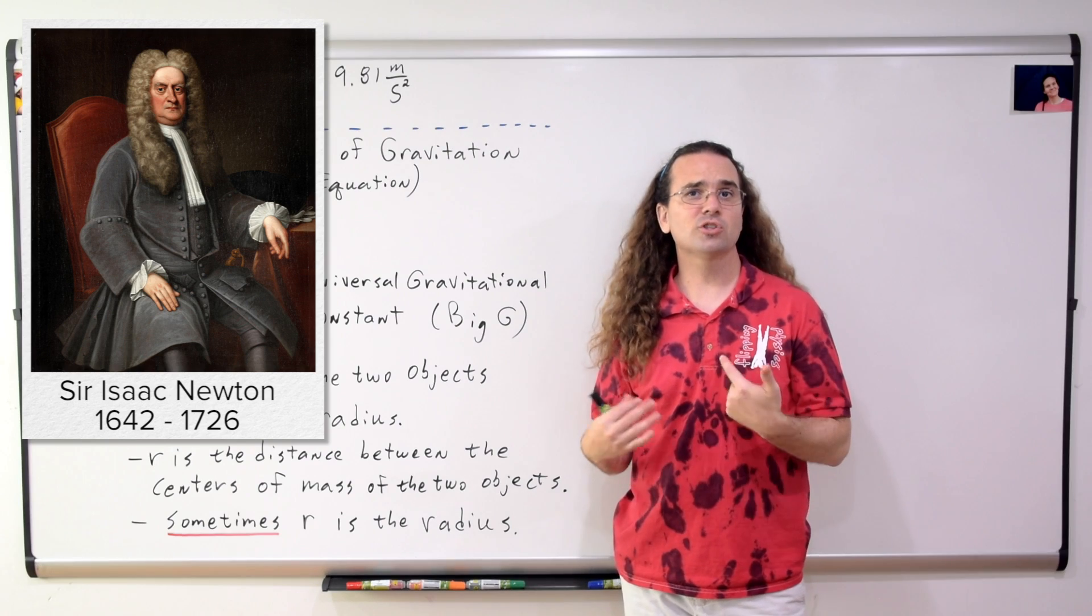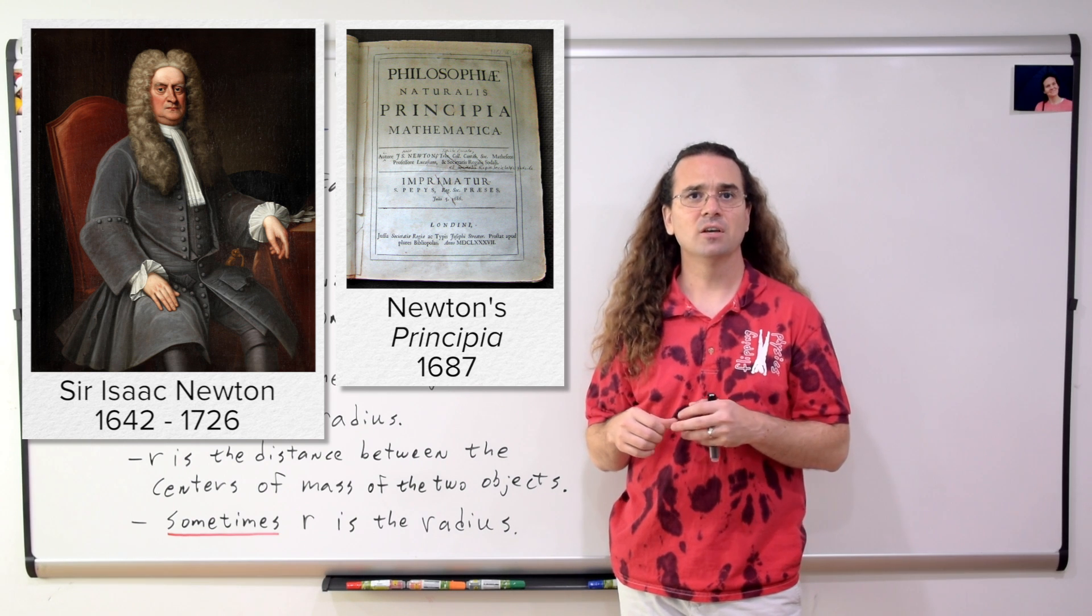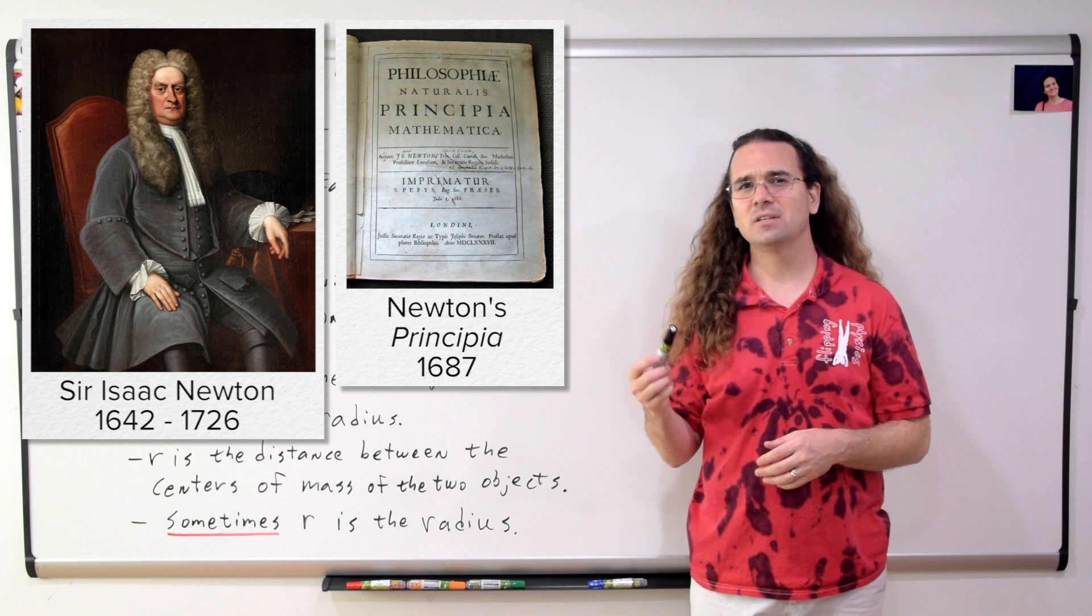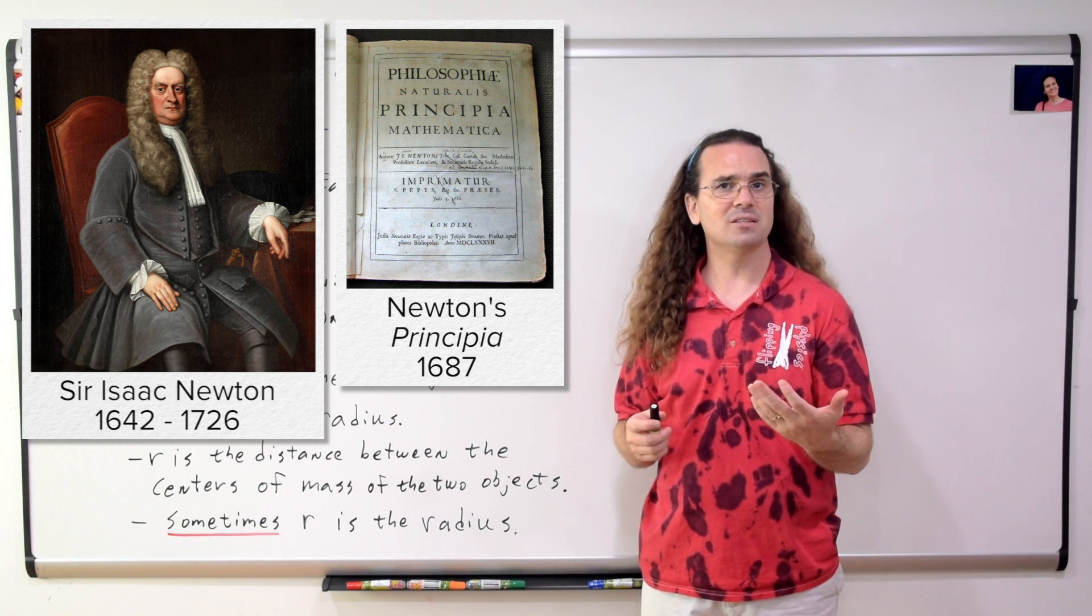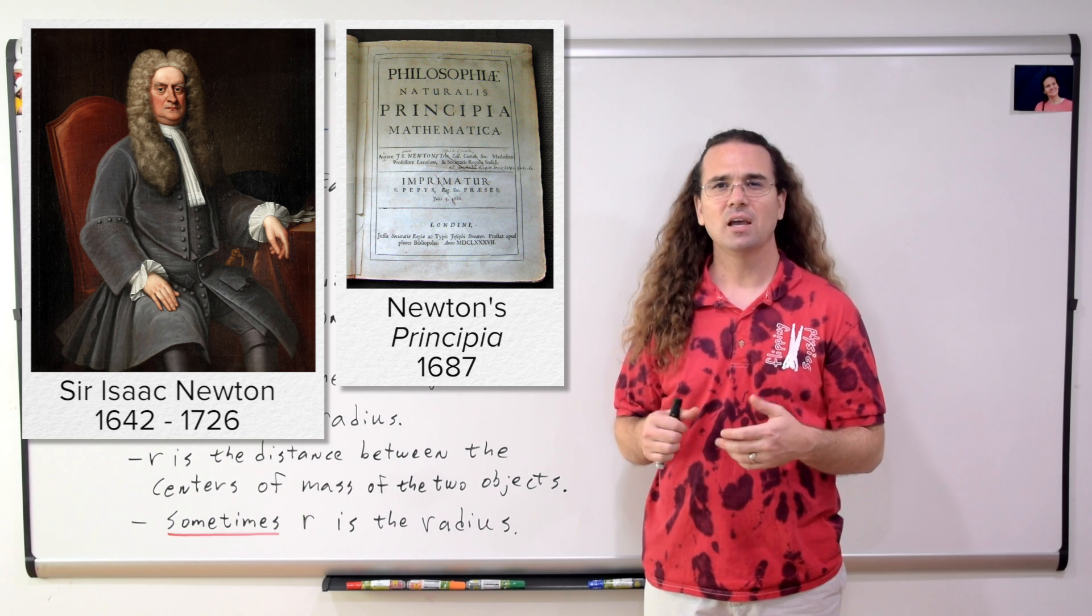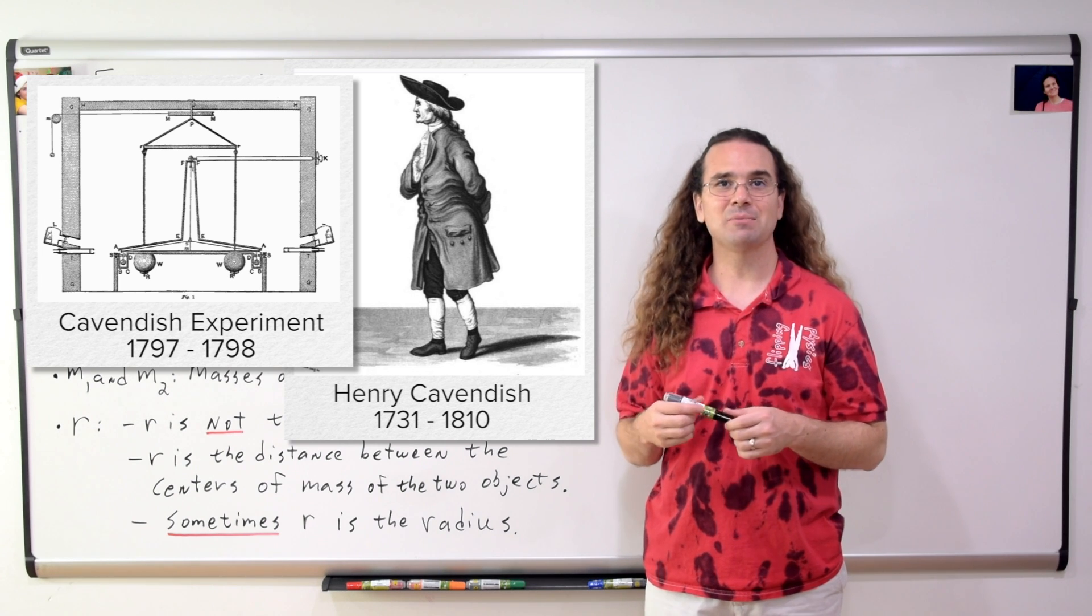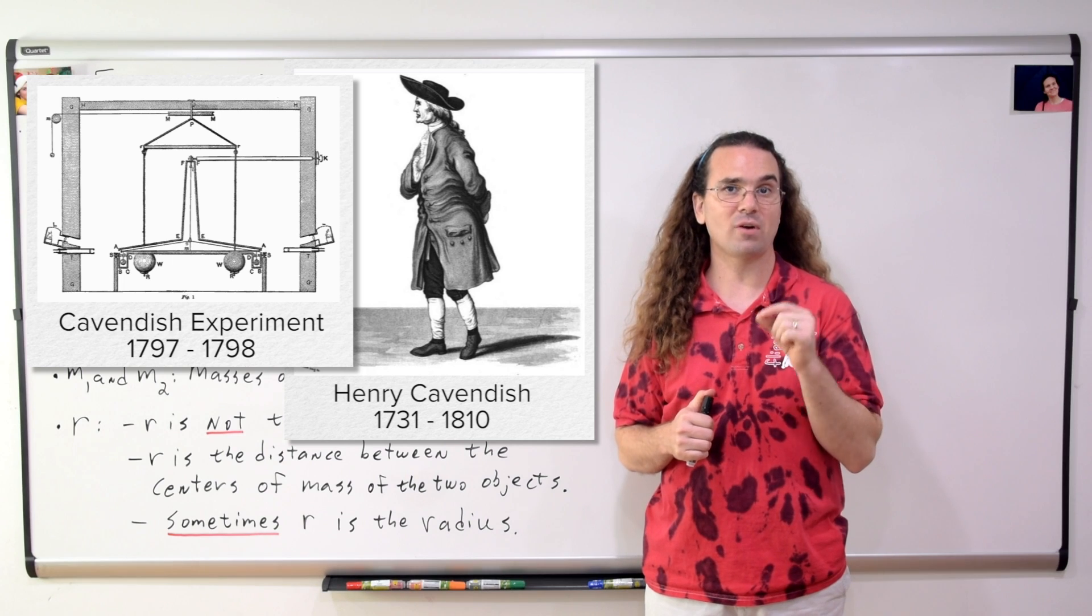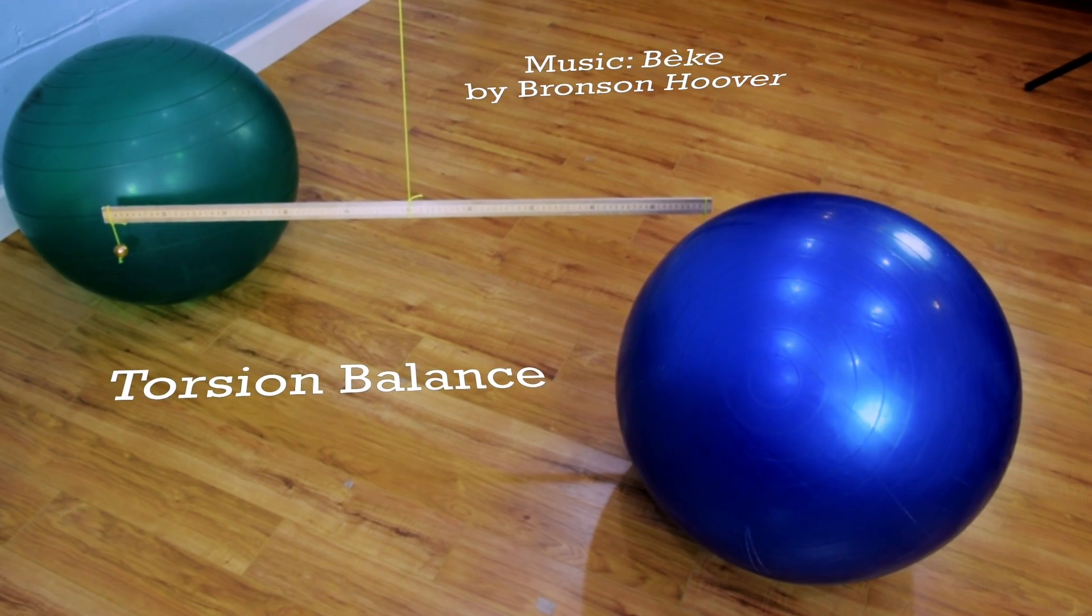Just so you know, even though Sir Isaac Newton published his book Principia in 1687, which included his universal law of gravitation, Newton never actually was able to measure the universal gravitational constant with any real accuracy. It wasn't until 1798, more than 100 years later, that a British scientist named Henry Cavendish performed the first accurate measurements of the universal gravitational constant. He used a large torsion balance to measure big G.